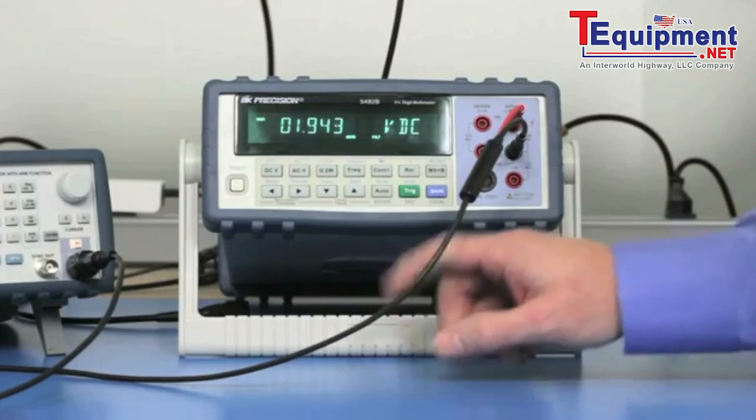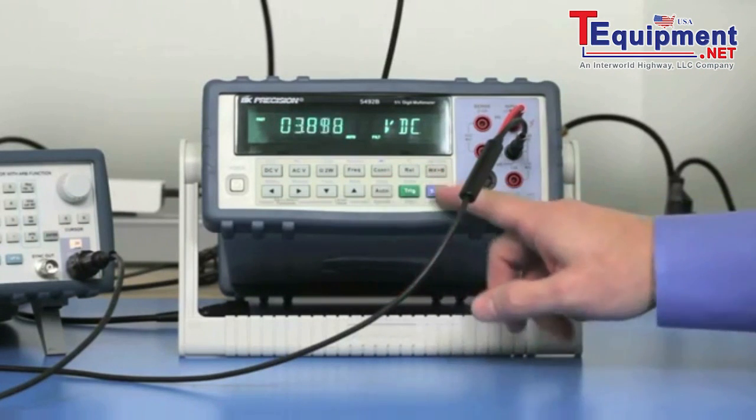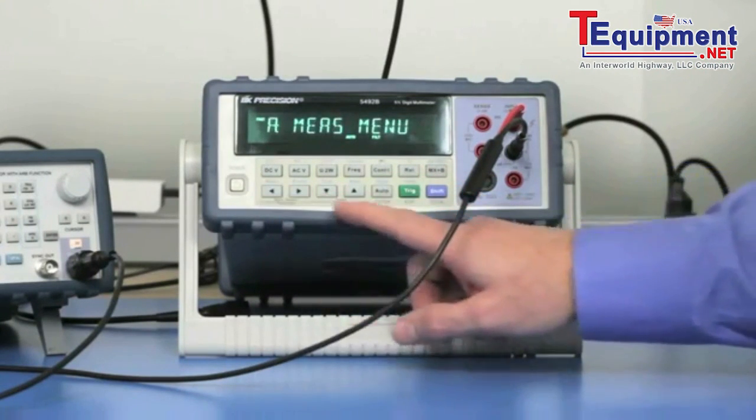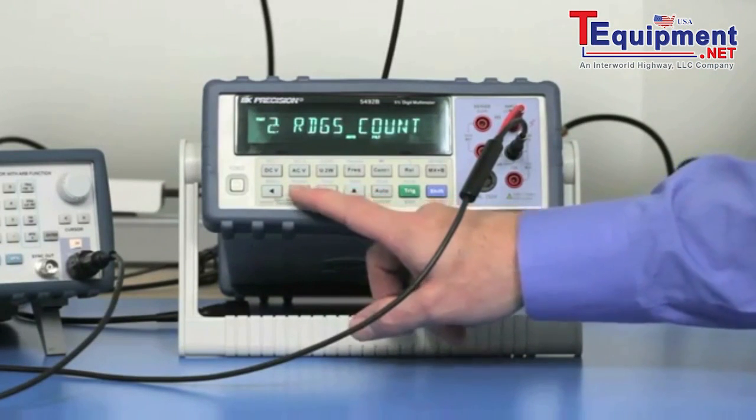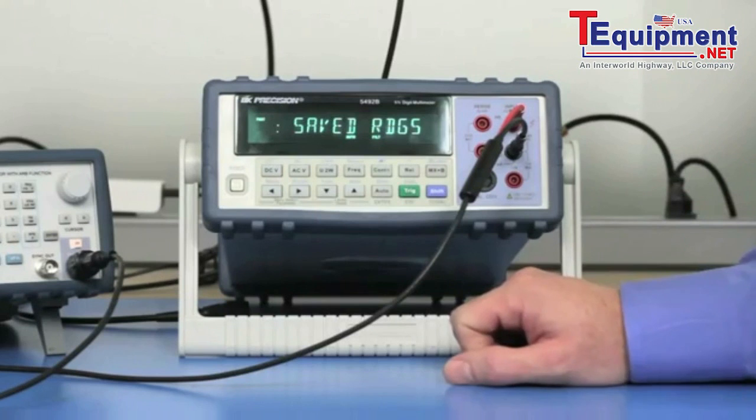So now it has stopped making its measurements. And to view them, you press Shift, left arrow. And we will go to System Menu again. And go to Saved Readings.